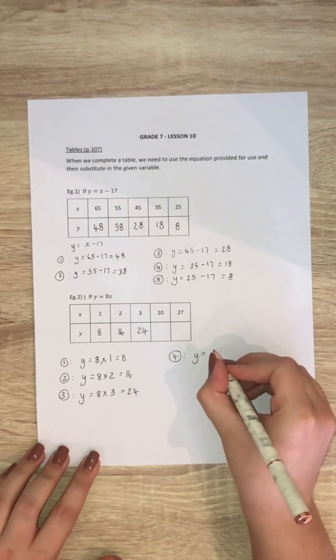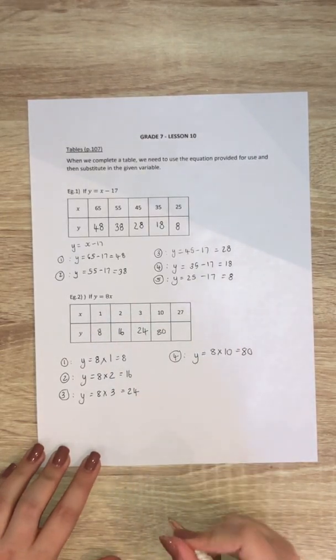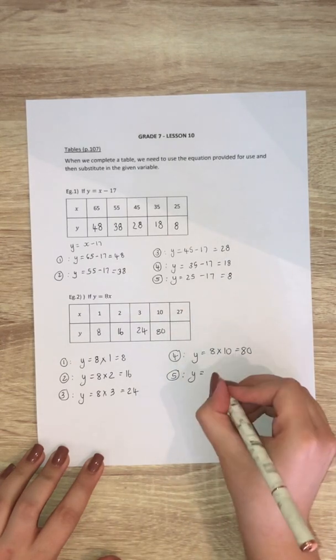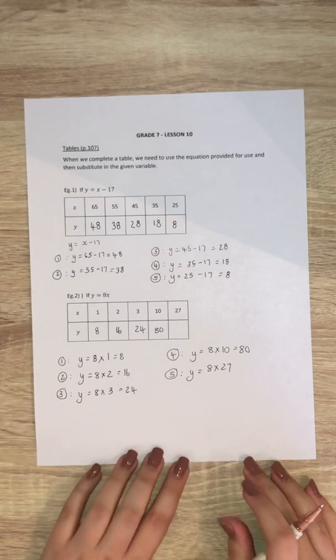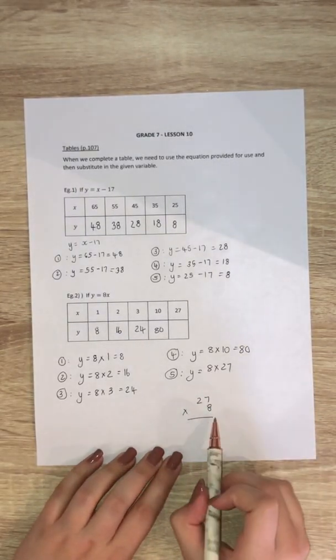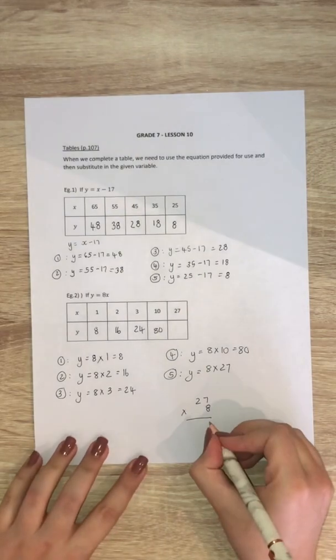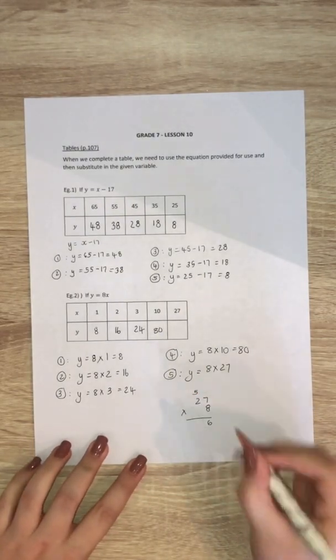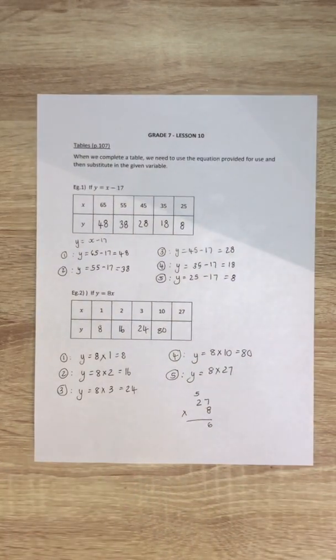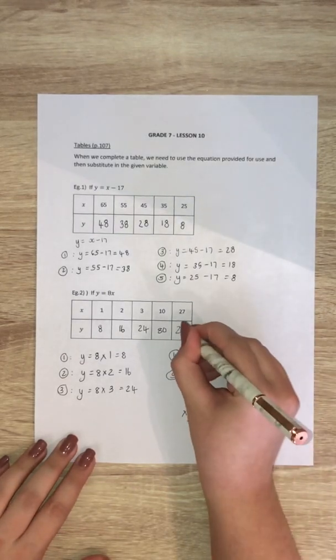Now my x value is 10. So it's 8 times 10 which is 80. And the last one y equals 8 times 27. Now if it's a bit difficult to work out in your head you're welcome to do a little sum on the side. So 8 times 7 is 56, so we write down the unit, we carry the 10. 8 times 2 is 16, plus 5 is 21. So my answer is 216 and that is the final answer in the table.